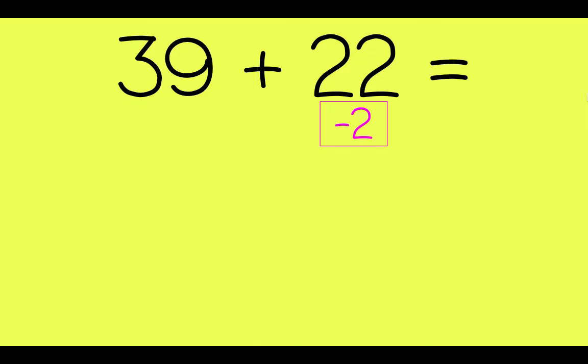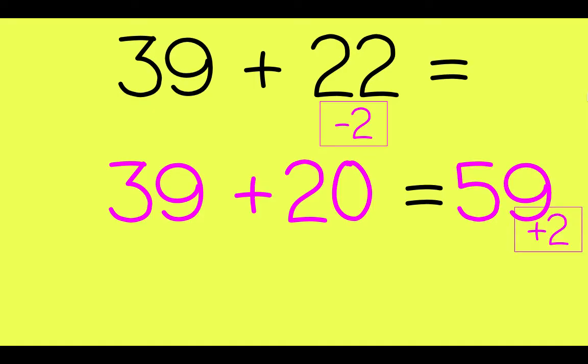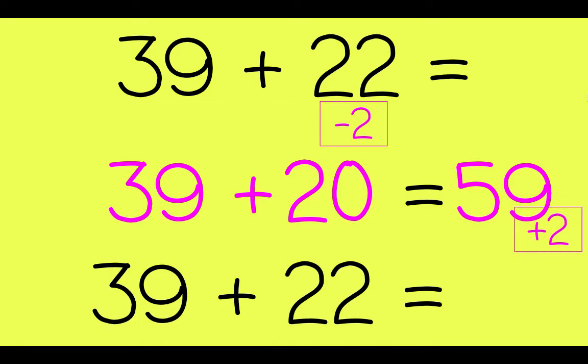Let's make 22 friendly by taking 2 away to find a friendly round 20. 39 plus 20 is 59. Add that 2 back that you took away in the beginning. 39 plus 22 is 61.